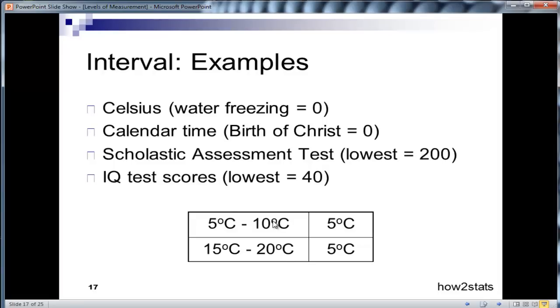And the reason you can't say that is that the zero point in the Celsius scale is not actually zero. That's just the point at which water freezes. There are many degrees below Celsius that are negative. And so in the scheme of things, the difference between 10 degrees and 20 degrees is really not that much when you consider that the temperature in the world can go as low as the minus 60s.